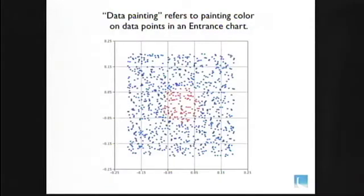The main part of this talk, though, is data painting. There's an example on the screen now. You can see a scatter plot with a bunch of blue points, and some of them are red. On the next slide, we'll see how to do that.